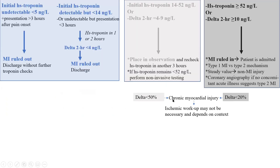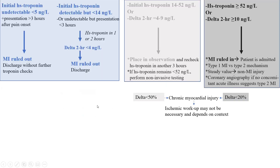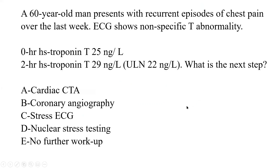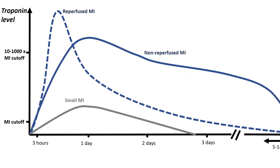In this context, you do need ischemic workup. Because it's chronic myocardial injury, you do not need to do coronary angiogram. Either cardiac CTA or nuclear stress testing are acceptable. My choice is cardiac CTA. Delta is checked at two hours, but when in the gray zone or high zone, recheck the level at three hours and keep doing delta.